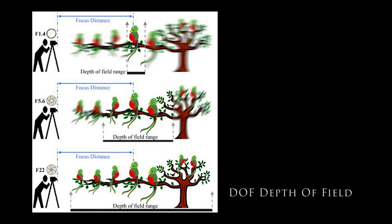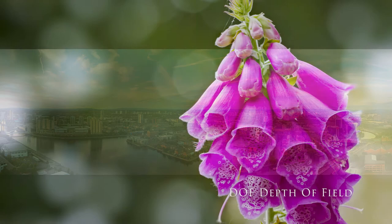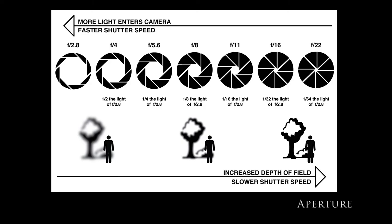Because depth of field has an impact on both the aesthetic and technical quality of a picture, sometimes you'll want to use an extensive depth of field to keep everything sharp. A classic example is when you're taking a picture of a landscape, where generally the most desirable outcome is to capture detail from the foreground all the way to the background. Other times, a shallow depth of field would be preferable — it enables you to blur the background and foreground details, causing distractions to melt away and allowing you to direct the viewer's focal point to where you want it to be.